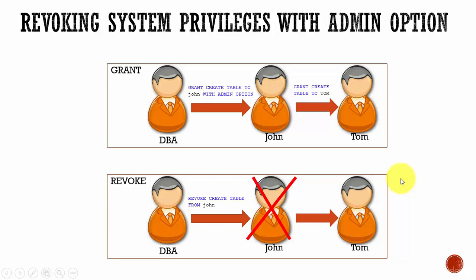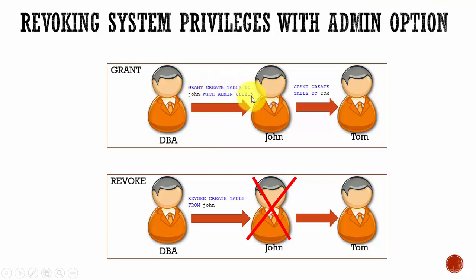In this session, let's learn about revoke, and how it works when system privileges or object privileges are granted with admin option. The first scenario: the DBA has given grant create table to John with admin option. That means John can create a table and also he can grant the create table privilege to some other users.